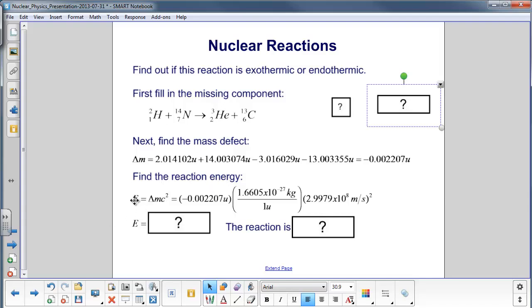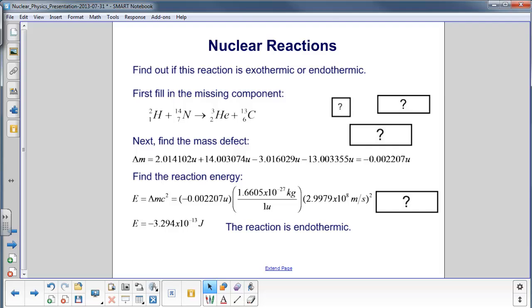We now find the Q value, or the reaction energy, by E equals the mass defect times the speed of light squared. We convert the mass units to kilograms using this conversion factor. We then have the speed of light. Normally we use 3 times 10 to the 8th meters per second, but because of the significant figures here, we take it out to 4 decimal places. We square it, and then we find that Q, the reaction energy, is minus 3.294 times 10 to the minus 13th joules. Now since that's a negative Q, a negative reaction energy, it is an endothermic reaction. More energy has to be put into this than comes out at the end.